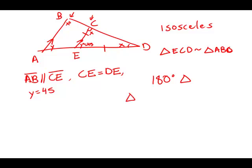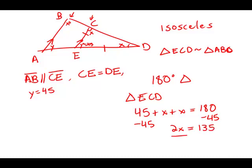So in triangle ECD, the smaller triangle, we have 45 plus X plus X equals 180. So I'm going to subtract 45 from both sides. We get 2X equals 180 minus 45. That's 135. Then divide both sides by 2. X equals 67.5.